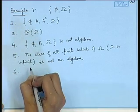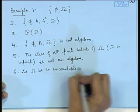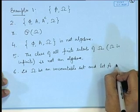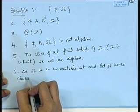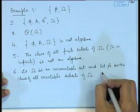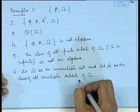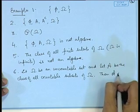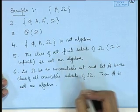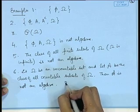Let us take a non-trivial example. Let omega be an uncountable set. Let A be the class of all countable subsets of omega. Then once again, if I consider a countable subset of omega, its complement will become uncountable and therefore A cannot be an algebra. However, it will be a ring, because if I take any two countable sets, their union is again countable and the difference of two countable sets is finite or countable. Therefore it will be a ring.